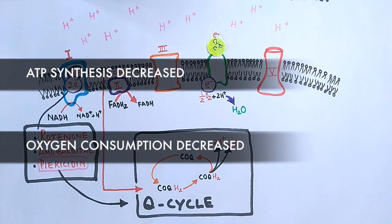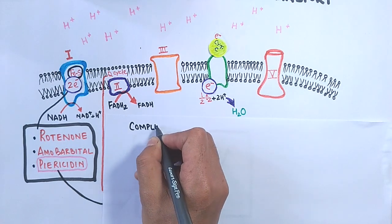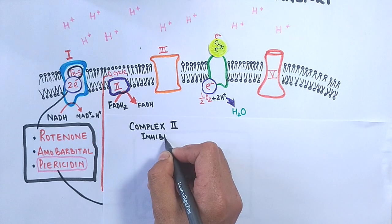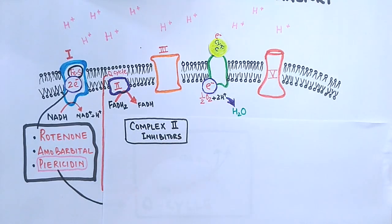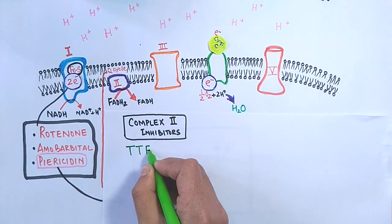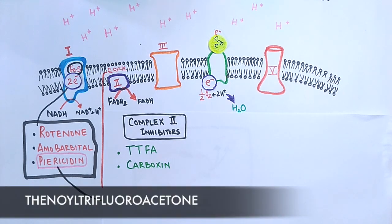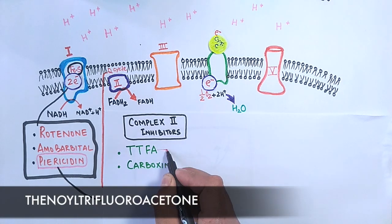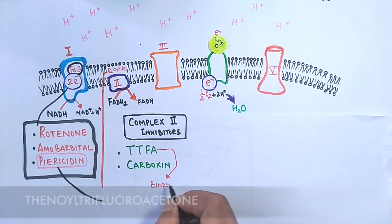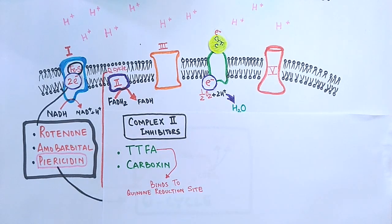Now let's move towards the complex 2 inhibitors. The major two compounds that inhibit the flow of electrons at complex 2 are TTFA and carboxin. TTFA is thenoyltrifluoroacetone, and this binds to the quinone reduction site in complex 2, thereby halting the transport of electrons further in the chain.